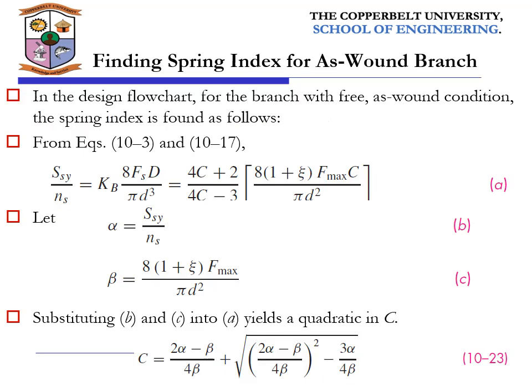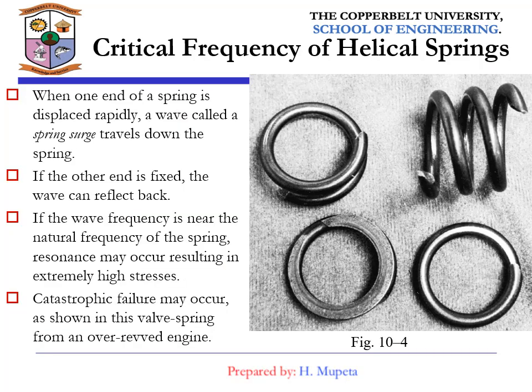In the spring flow chart for the branch with the S1 condition, the spring index is found using equations A, B, and C. Substituting equations B and C into equation A gives a quadratic formula to find the value of C, given by equation 10.23.